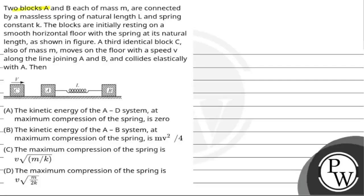This question reads: two blocks A and B, each of mass M, are connected by a massless spring of natural length L and spring constant K. The blocks are initially resting on a smooth horizontal floor with the spring at its natural length as shown in the figure. A third identical block C, also of mass M, moves on the floor with speed v along the line joining AB and collides elastically with A.